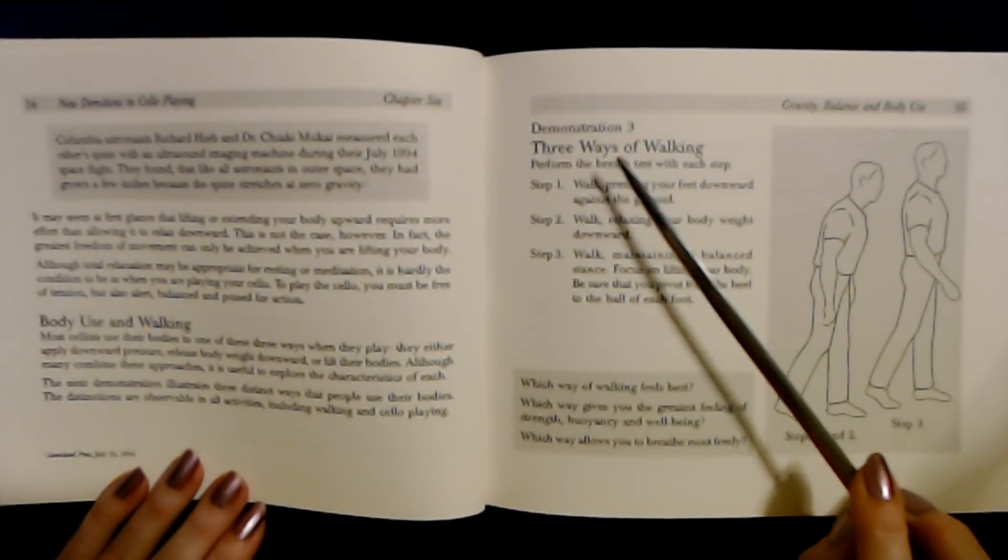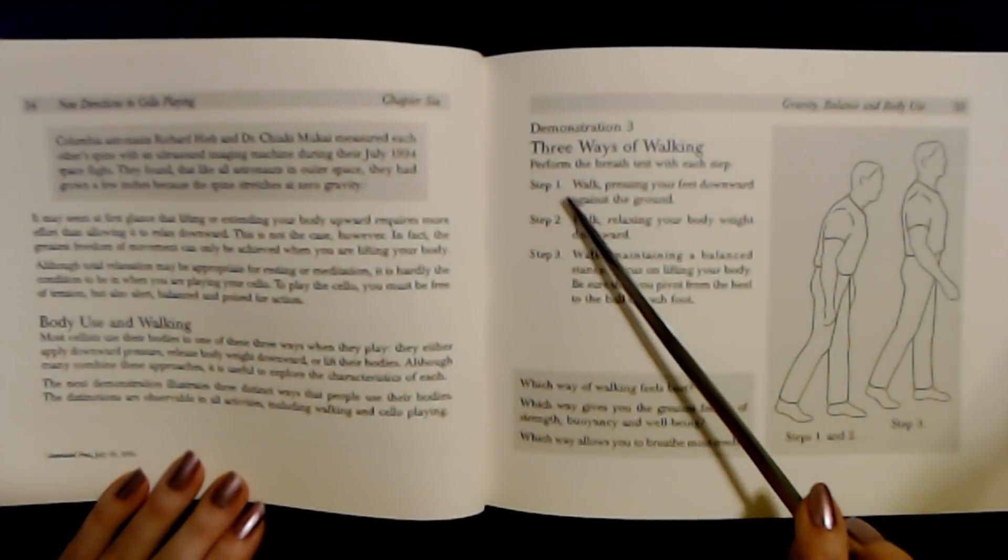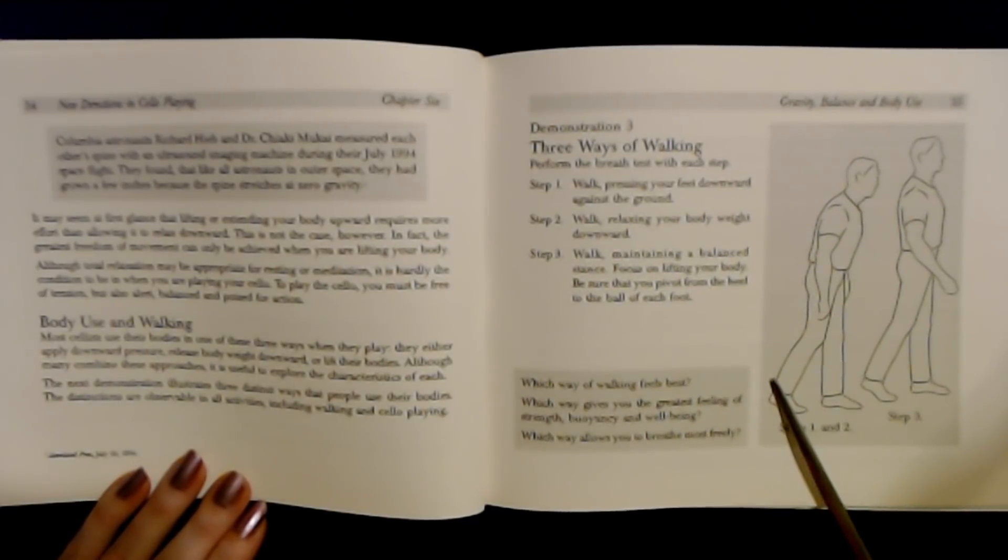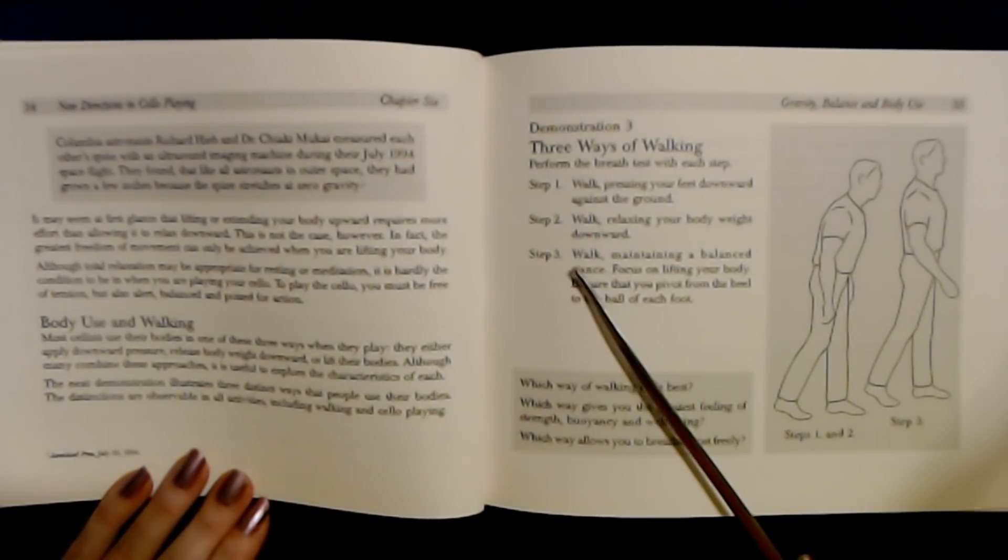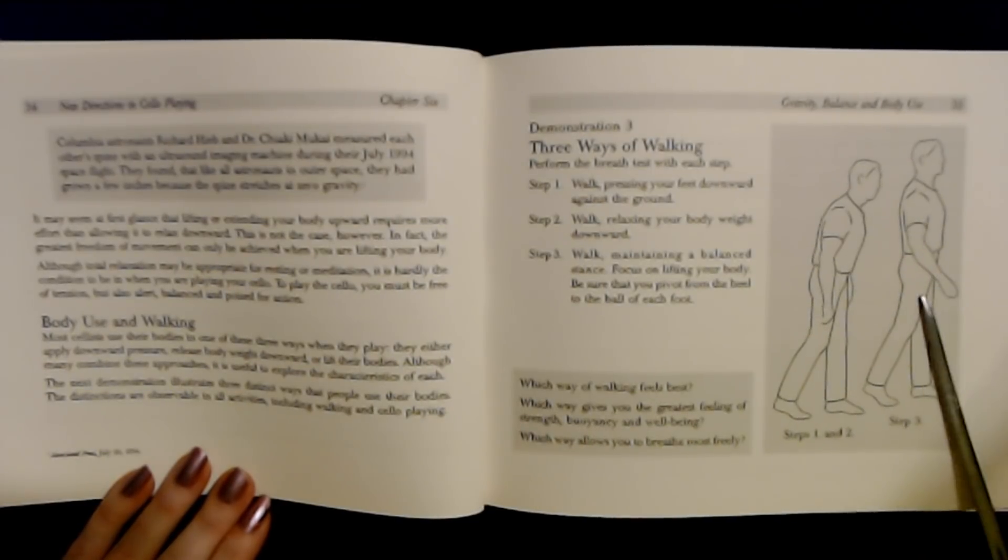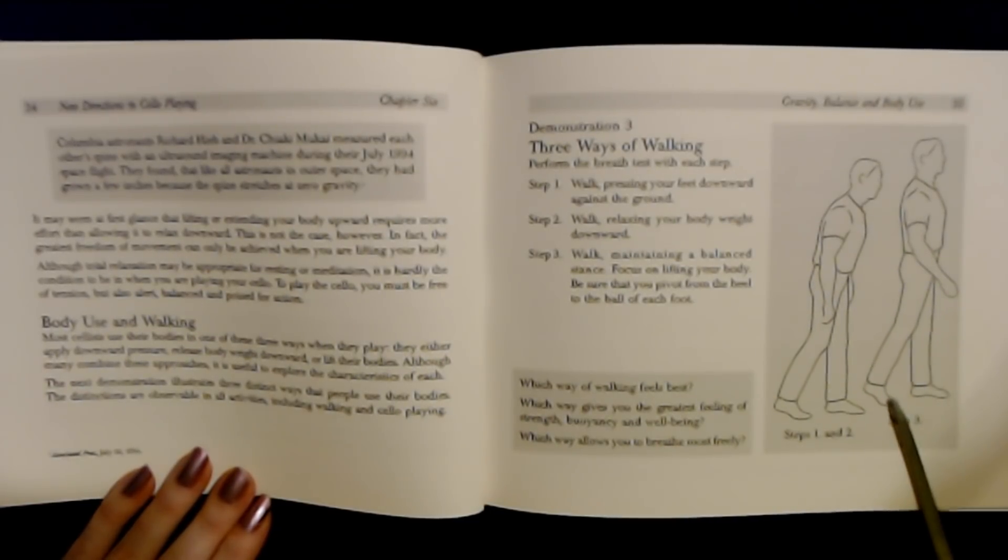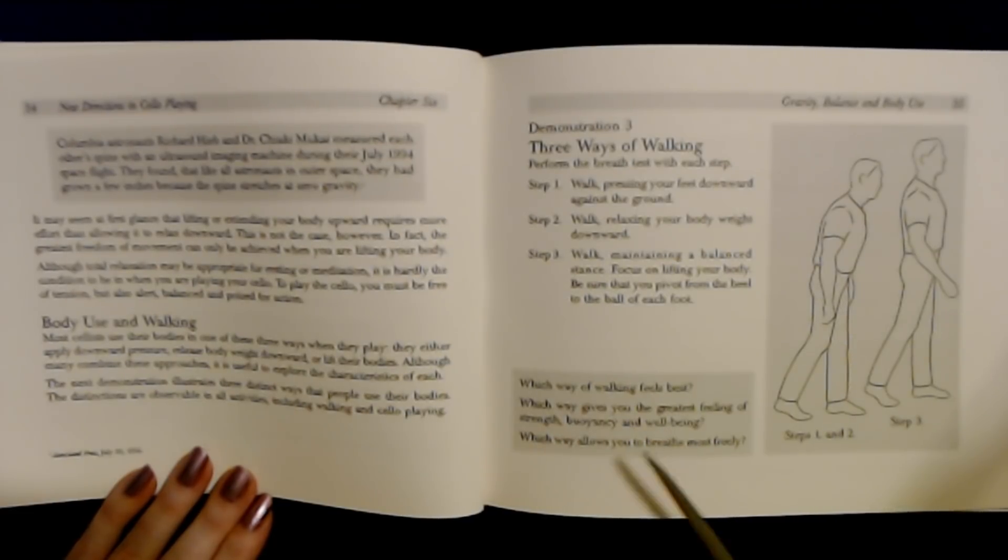Demonstration three. Three ways of walking. Perform the breath test with each step. Step one: Walk, pressing your feet downward against the ground. Step two: Walk, relaxing your body weight down. Step three: Walk, maintaining a balanced stance, lifting your body. Be sure that you pivot from the heel to the ball of each foot. Which way of walking feels best?